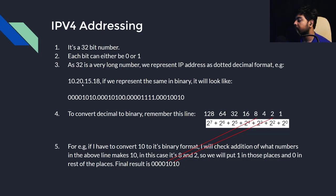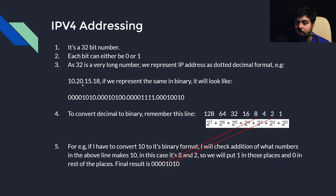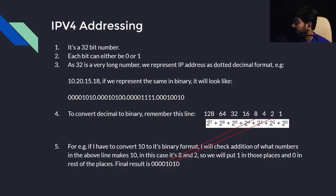It's really easy. You just need to remember the powers of 2 up to 2 to the power 7. The value of 2 to the power 0 is 1, and 2 to the power 7 is 128. Write them from 2 to the power 0 at the rightmost place up to 2 to the power 7 at the leftmost place. So 2 to the power 7 is 128, 2 to the power 6 is 64, and so on.